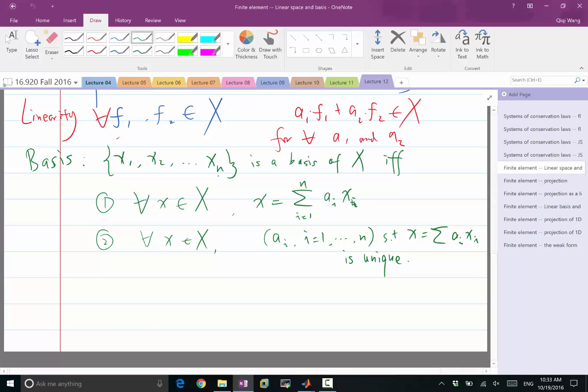So basically, if we have property two, that means any members of the basis cannot be represented as a linear combination of the other members.